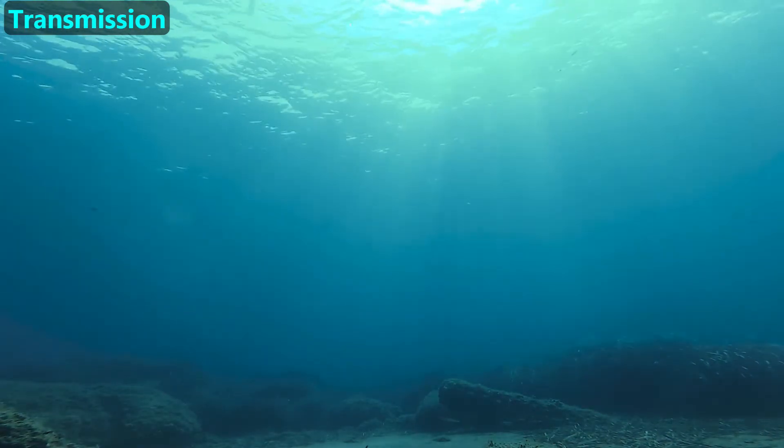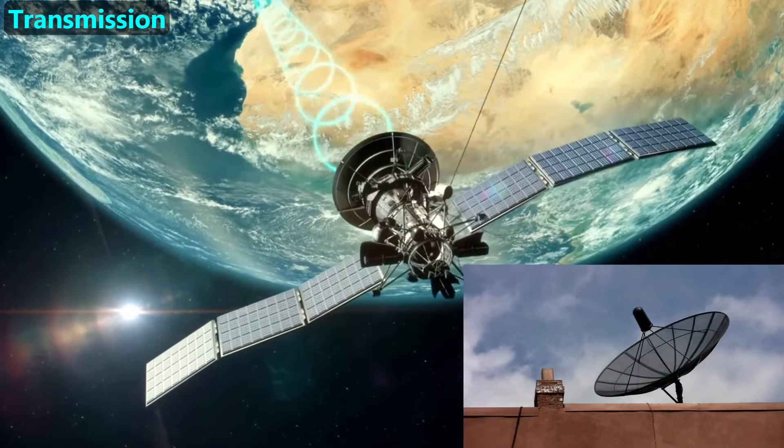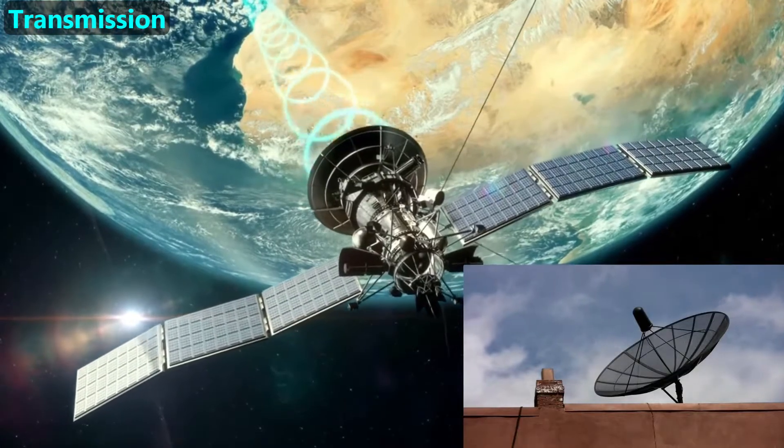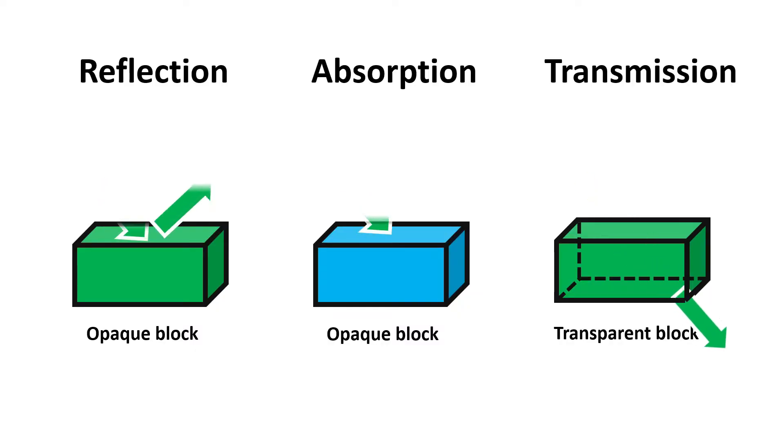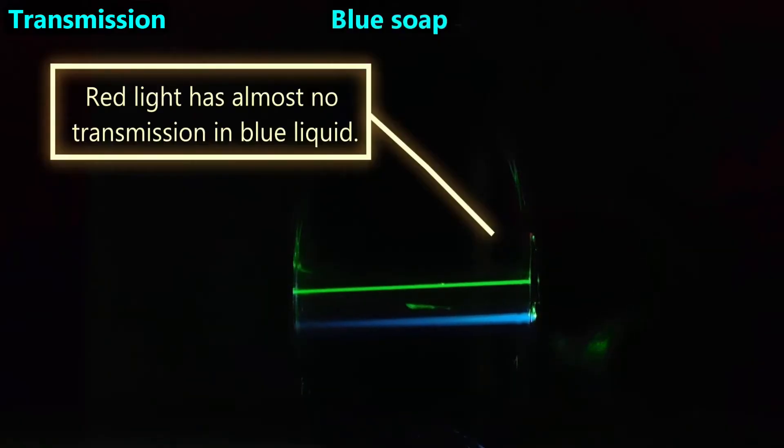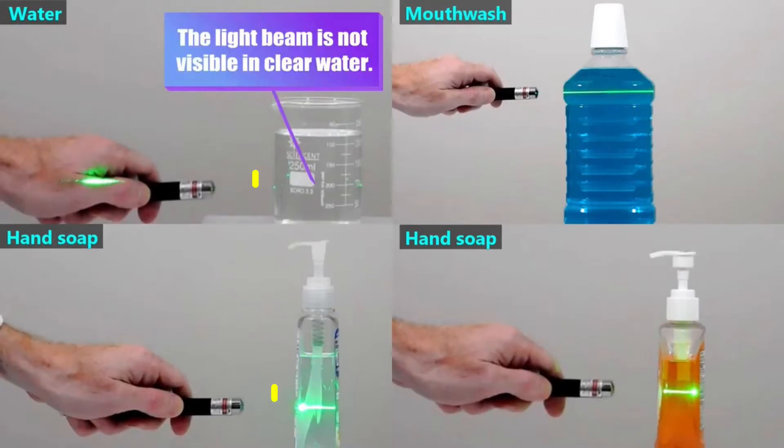Some authors use the word transmission to refer to waves propagating through any space, including a vacuum like outer space. Usually, the words transmission or transmit are presented in the context of the words reflection or absorption. For example, green and violet light transmit through this liquid well, but red light has almost no transmission because it's being absorbed by the liquid. We could say the reflections on the outside of these containers prevent some of the laser's light from transmitting through these liquids.